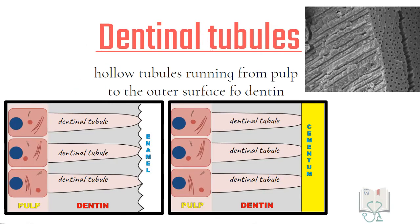Let us start with dentinal tubules. Dentinal tubules are hollow tubules or canaliculi which run from the pulp where the odontoblasts are present to the dentino enamel junction in crown or to the cemento enamel junction in the root.